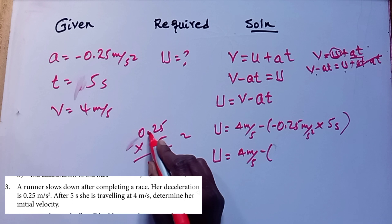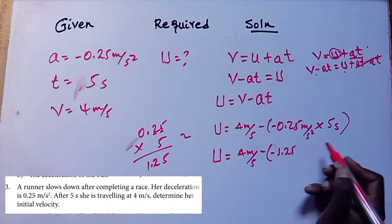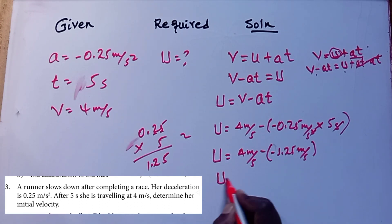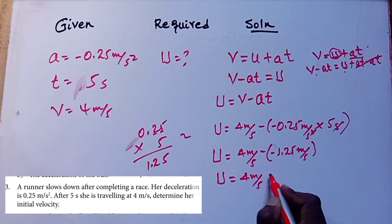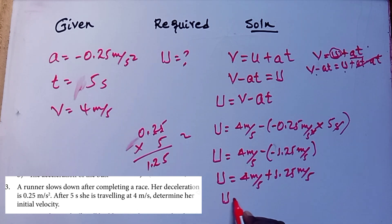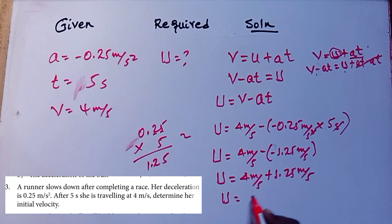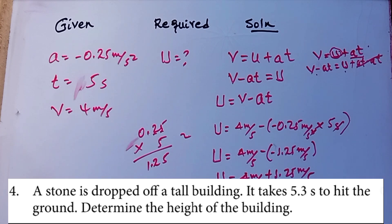Calculating: negative 0.25 times 5 gives minus 1.25, so initial velocity is equal to 4 minus (negative 1.25), which equals 4 plus 1.25. Therefore, initial velocity is equal to 5.25 m/s.